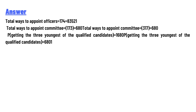The answer: total ways to appoint officers — 17P4 equals 83,521. Total ways to find the committee — 17C3 equals 680. The probability of getting the three youngest of the qualified candidates is 1/680.